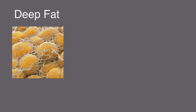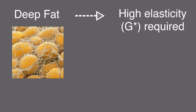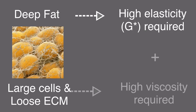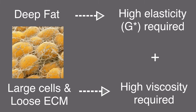Now when injecting into the deep fat, we want something strong enough to lift the supporting structures above, so we're going to look for a high G prime product. Now these fat cells are large and the matrix is loosely bounded, so ideally we need something with tight particles and large particles if possible.